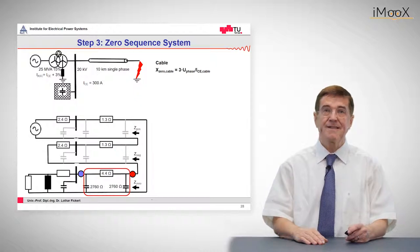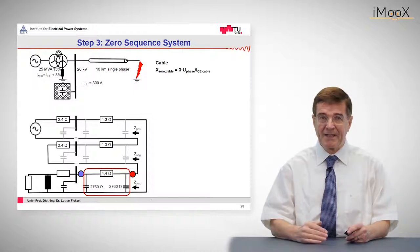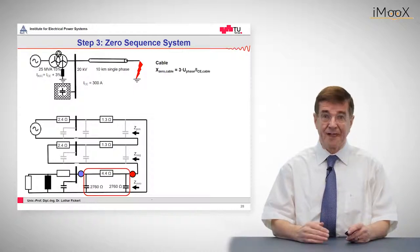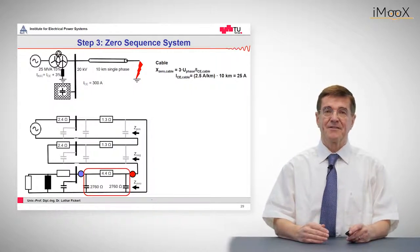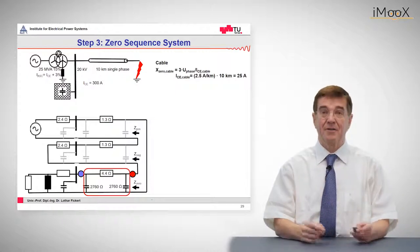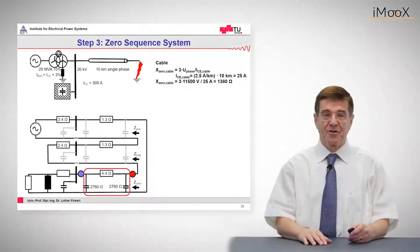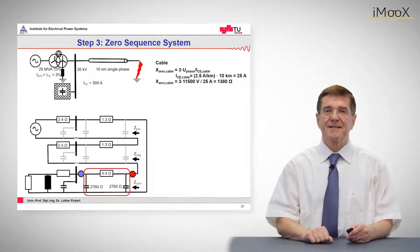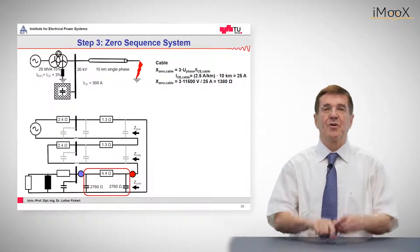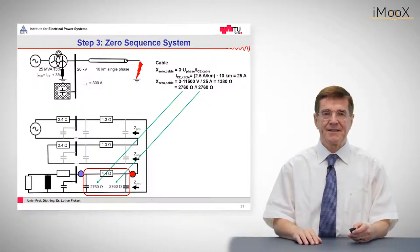But the cable also has, in this case this is important, it has transverse impedances, these capacitive reactances. And they are calculated as follows. This capacitance is given by three times phase voltage divided by the earth fault current. And then this comes out as 25 ohms. And accordingly the transverse, this shunt reactance is 1380 ohms, or placed on the two ends left and right of the cable, we have this value as indicated here.